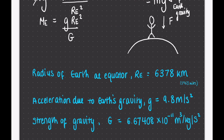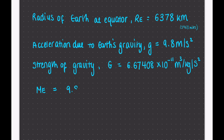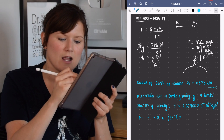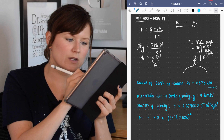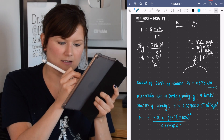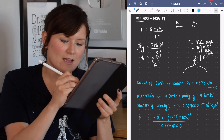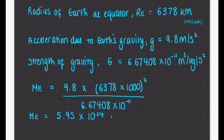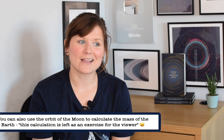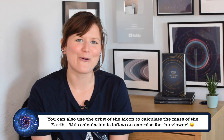Now we have all those numbers, it's just a case of plugging them in: the mass of the Earth equals 9.8 times 6,378 kilometers (converted to meters, so times 1,000) squared, all divided by 6.67408 times 10 to the minus 11, giving us 5.95 times 10 to the 24 kilograms — approximately 6 trillion trillion kilograms. It was fairly simple maths by the end, but only possible because of the huge amount of science done over the past 2,000 years of history — a stark reminder that all of science today is done standing on the shoulders of giants.